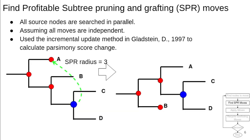matOptimize uses subtree pruning and regrafting, or SPR moves. An example of a radius-3 SPR move is shown below. All source nodes are searched in parallel for profitable moves within the user-specified radius.